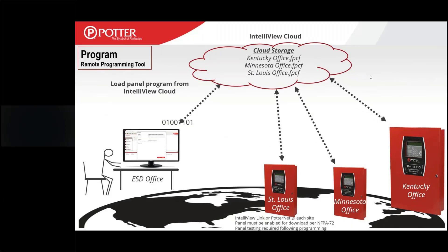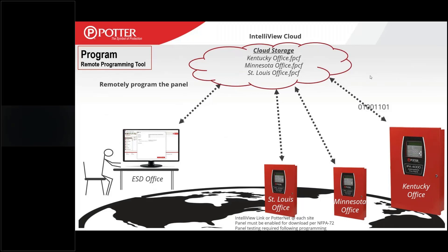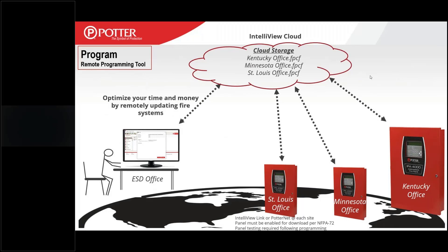Through our Potter programming tool, you can access any one of those panel databases and know exactly how that panel is programmed. Particularly if a panel goes down and you can't find the backup file, and the panel's down so you can't get it from the panel — we have it stored in the cloud under your account. You can get a new panel in there and reprogram. Once it's backed up, you can use our Potter programming tool to grab those files from the cloud, make changes, and send those programs back to the panel no matter where you're located.